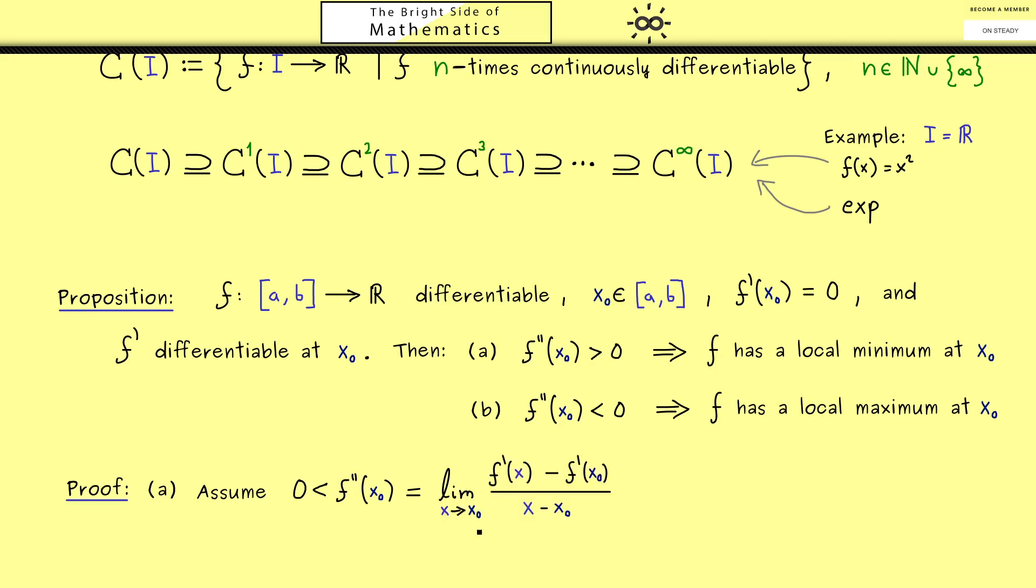So we have the limit x to x0 of f' of x minus f' of x0 divided by x minus x0. Now you surely remember that we used the symbol delta for this expression here. And by using this notation the meaning of differentiability at the point x0 was simply given by the continuity of this function at the point x0.